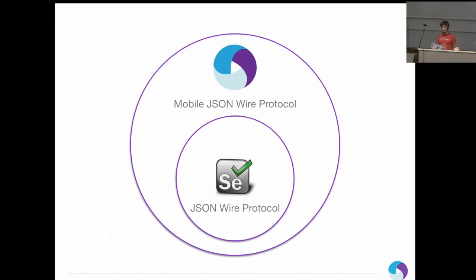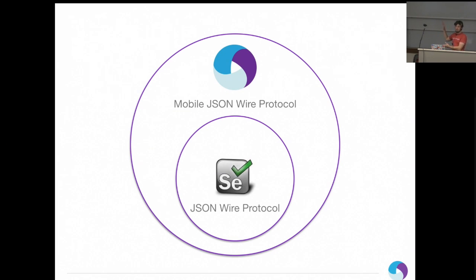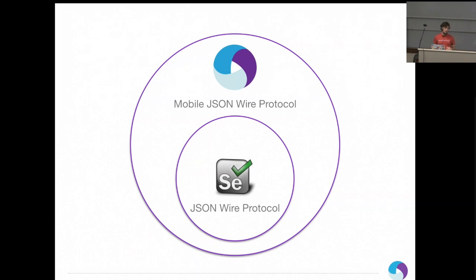Appium runs on something called the mobile JSON wire protocol, which is just a superset of the original JSON wire protocol. This means we guarantee we'll always be a superset of Selenium — if there's a change in the Selenium spec, we'll update the Appium mobile JSON wire spec. So you can use the same exact code and test script to test your mobile iOS and Android devices. The Appium drivers literally extend or inherit from the original Selenium drivers.